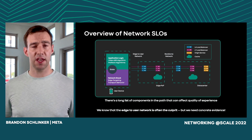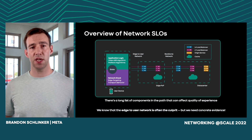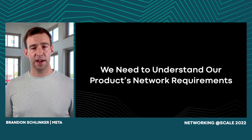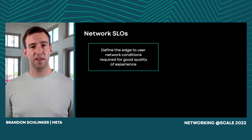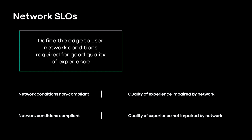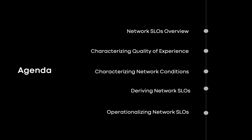We know from experience that the edge-to-user network is often the culprit, but we need concrete evidence to say that. That's where network SLOs come in. Network SLOs define the edge-to-user network conditions that are required for good quality of experience. They enable very powerful statements: if network conditions are non-compliant, meaning the network isn't meeting those conditions, then we know definitively that quality of experience is being impaired by network conditions. Likewise, if conditions are compliant, we can definitively state that QoE is not being impaired by the network.